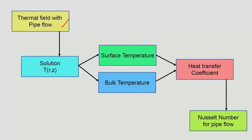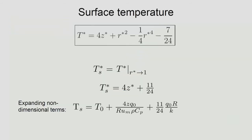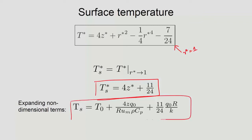The problem is now solved: T as a function of r and z is available for any position in the pipe, given constant wall heat flux q₀. We now use this solution to arrive at the bulk temperature and Nusselt number. The surface temperature T_S is obtained simply by substituting r* equals 1 into the solution: T*_S equals 4z* plus 1 − 1/4 − 7/24, giving a clean expression.